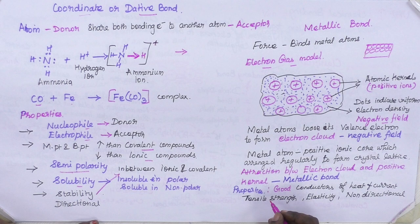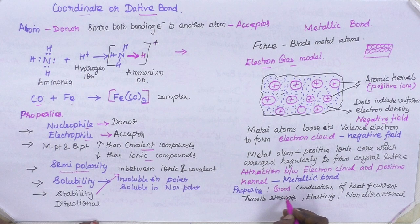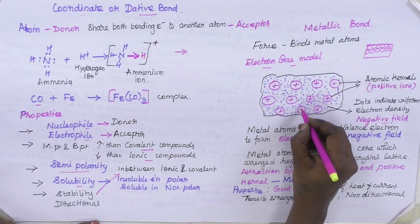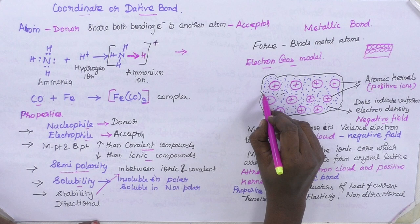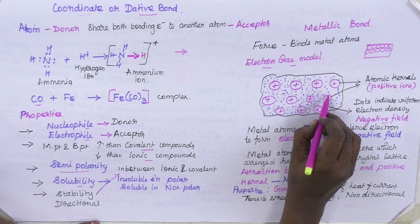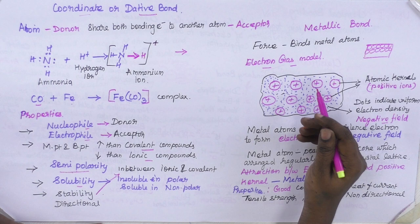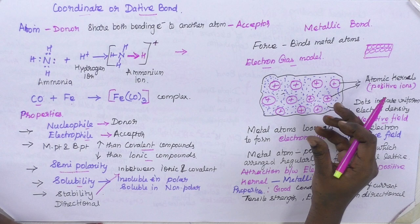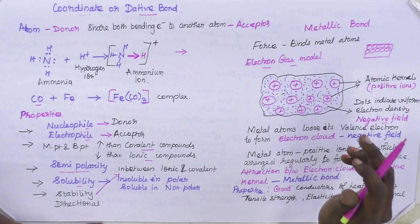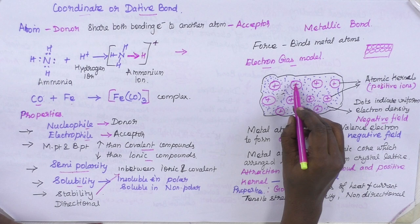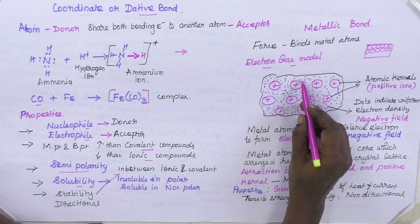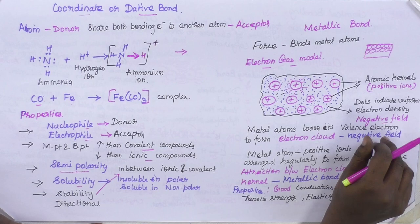Now let us see the properties of the metallic bond. The metallic bond makes metals good conductors of heat and electricity, with tensile strength, elasticity, and non-directional character. Because of the electron cloud, metals have mobile electrons, so current flows very fast in a metal compared to non-metals. The elastic character comes from the fluctuation of the electron cloud, which makes metals malleable, with tensile strength and elasticity. This attraction is also non-directional like an ionic bond — the force of attraction between the electron cloud and the positive kernel is in all directions.